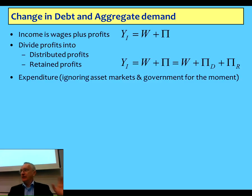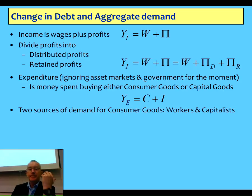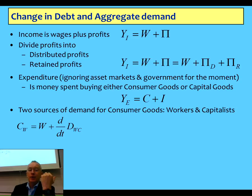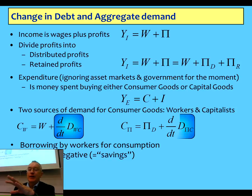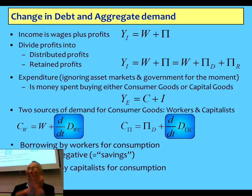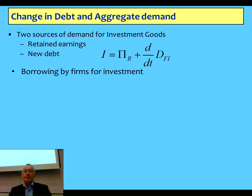Looking at expenditure in a single national economy, not yet taking into account asset markets or government, consumption and investment goods are purchased. There are two sources of demand for consumer goods: workers and capitalists — demand by workers including change in debt, and demand by capitalists including change in debt. Crucially, a change in debt doesn't mean somebody's increase is somebody else's decrease — that's the essential point about endogenous money. It can be negative, in which case workers save. The debt is added on to total demand, not subtracted from somewhere else. For investment, you can invest out of retained earnings or new debt.